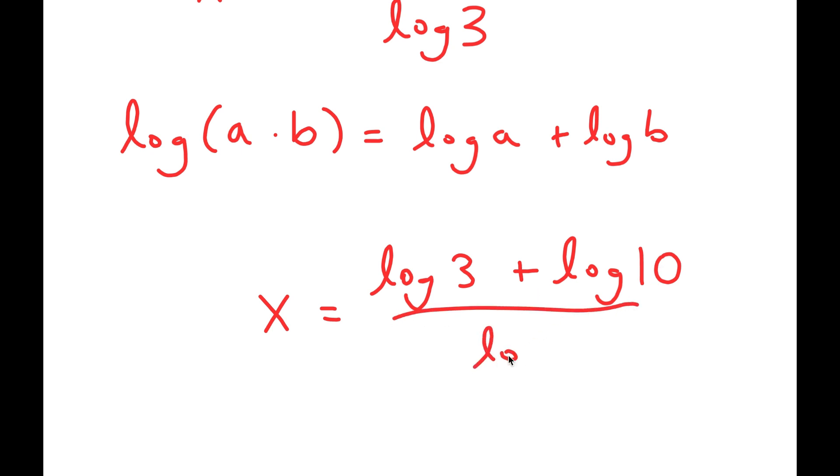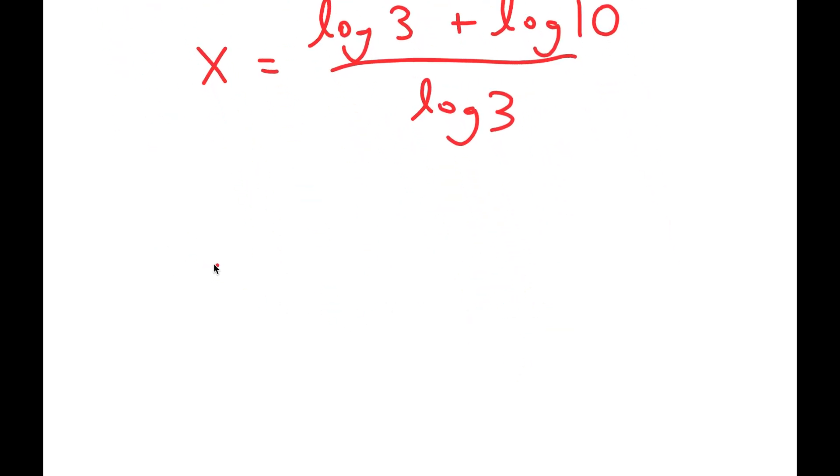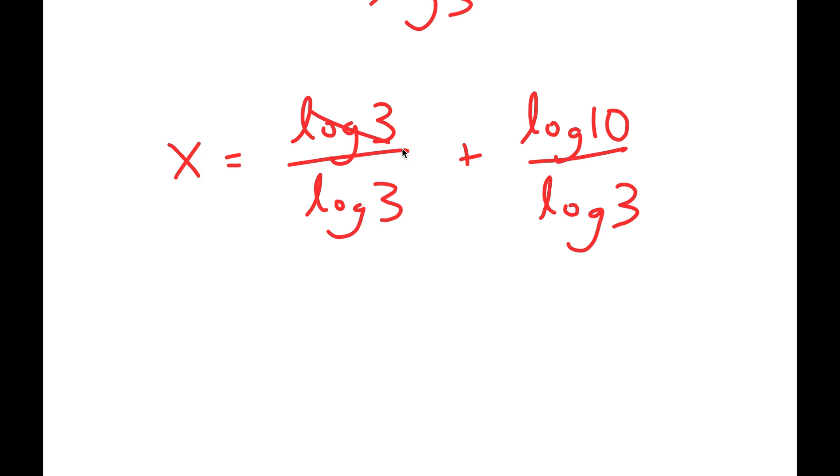Now, log 3 and log 3, these two cancel out. So I get x equals 1 plus log 10 over log 3.